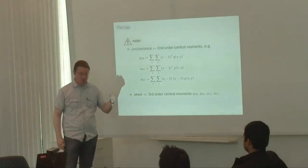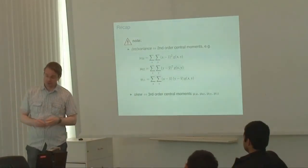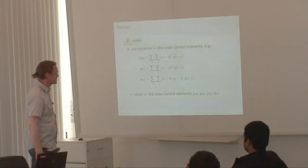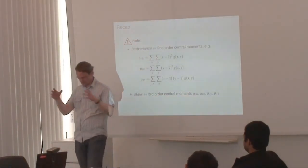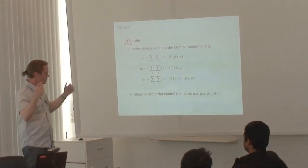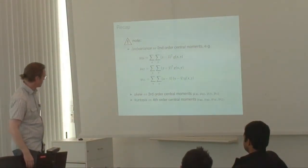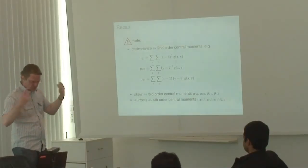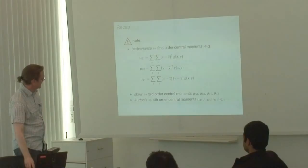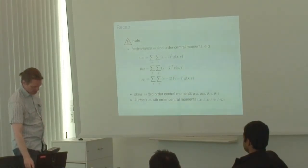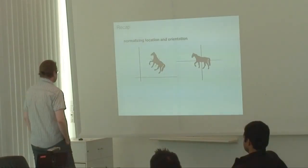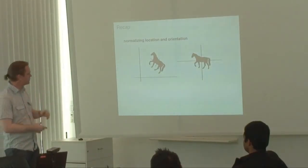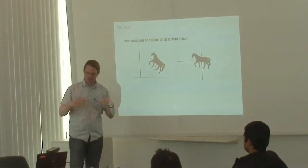These moments allow us to do much more — we can use them to determine whether a function is skewed. This is all still for bivariate functions, but can be generalized to higher-order functions. They also allow us to define the notion of kurtosis, but that was just an aside. The real question we are going to address today is slightly different from what we looked at last time — that was just preparation for what comes today.